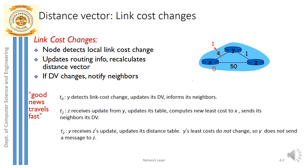At t=1, y received z's information saying the cost to reach from z to x is 1 plus 1 equal to 2. The cost stored in node y to reach x is 1. Since 1 is less than 2, y's cost is smaller, so y doesn't need to take the path via z to reach x. It can take the direct path, which is the least cost. This is how the update takes place.